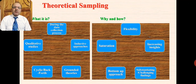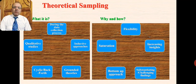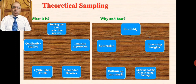The first characteristic of this particular type of sampling is that it happens during the data collection process rather than before it. The second characteristic is that it follows inductive approaches. Studies that follow grounded or inductive approaches actually follow theoretical sampling, and grounded theories are specifically associated with theoretical sampling.